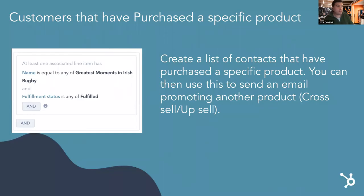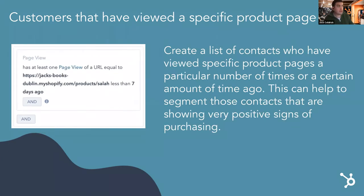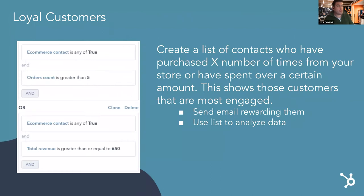Here's an example of a list showing customers who've purchased a specific product in the past. This is an example of a list to see if someone has viewed a specific product page on your website — not only once, but maybe several times or within a certain timeframe. And this is an example of a list where we can segment based on loyalty: pulling in customers who have spent more than €650 with us or have ordered more than five times.